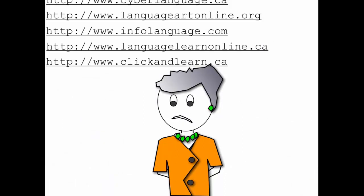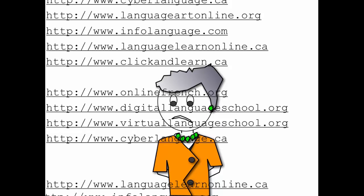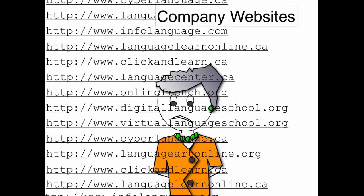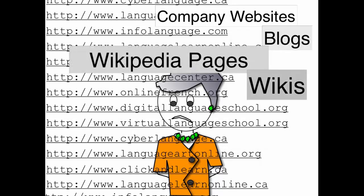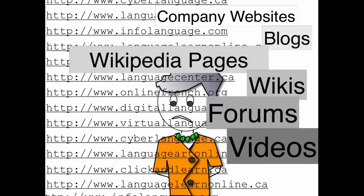Pierre and Joe both sent Mary a list of over 20 hyperlinks. Some were company websites, others were blogs, Wikipedia pages, wikis, forums, videos, etc.